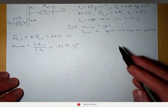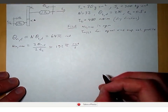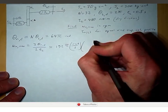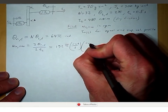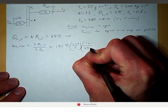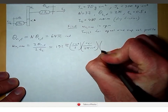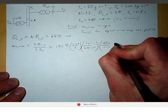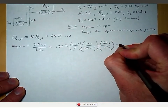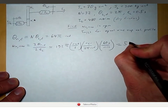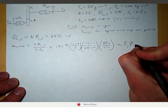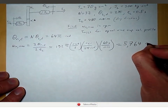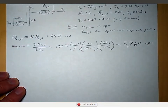We wanted this expressed in RPM, so converting units: for every revolution there are 2 pi radians, and there are 60 seconds in a minute. This gives us a speed of 5760 RPM, revolutions per minute.